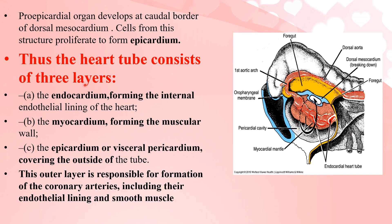The three layers are: the endocardium, forming the internal endothelial lining of the heart; the myocardium, forming the muscular wall; and the epicardium (visceral pericardium), covering the outside of the tube. This outer layer is responsible for formation of the coronary arteries, including their endothelial lining and smooth muscle. An important MCQ point: the coronary arteries' endothelial lining and smooth muscle are derived from the epicardium or visceral pericardium.